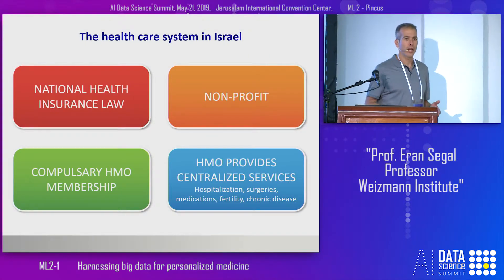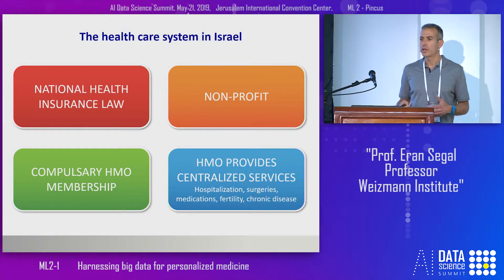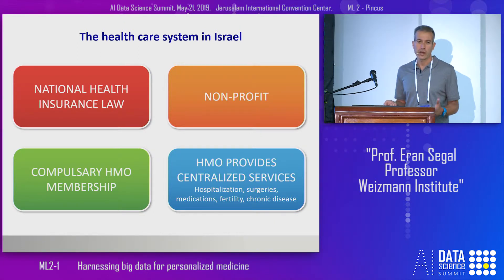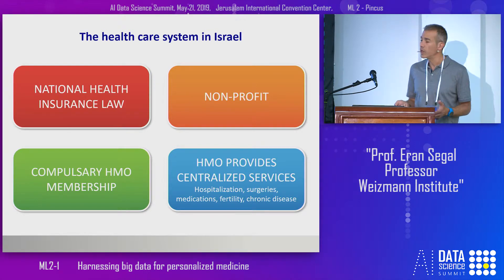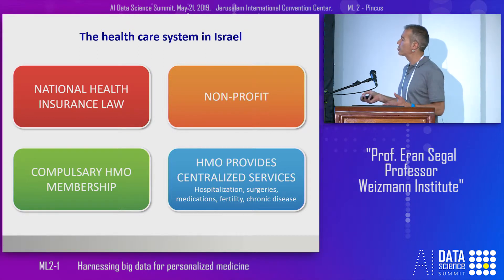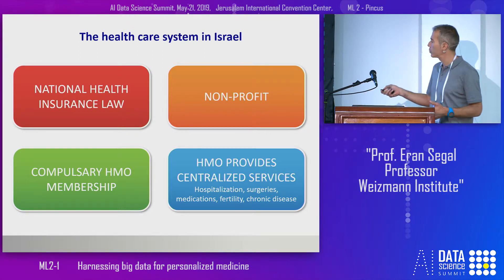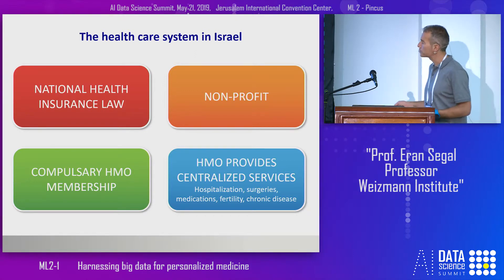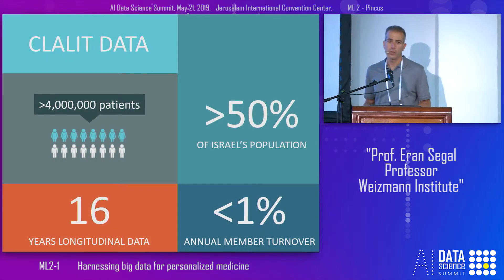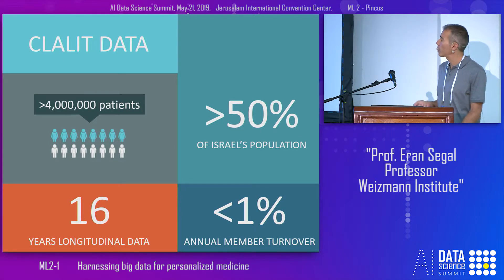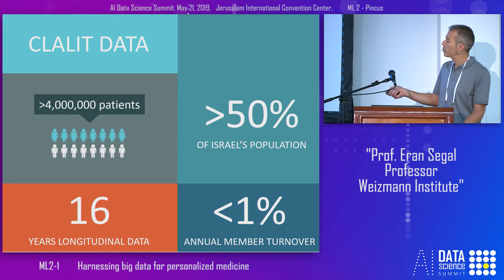The Israeli healthcare system is very favorable for research because it's non-profit. Every citizen has to be a member of one of the four HMOs, and the HMO has fairly complete information about every patient because HMOs provide centralized services including hospitalization, surgeries, medications, and chronic disease treatment. Specifically, we collaborate with Klalit, which insures over half of Israel's population, has 16 years of longitudinal data, and very little patient turnover.